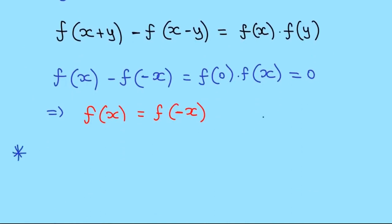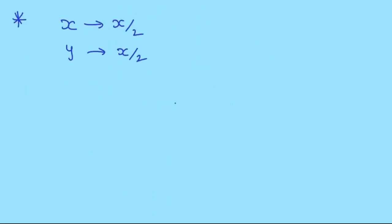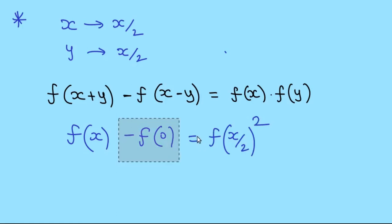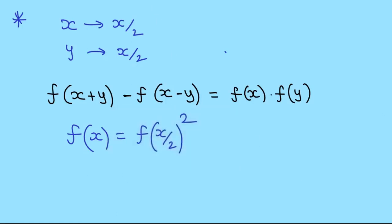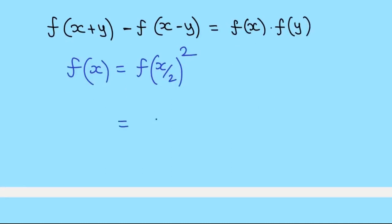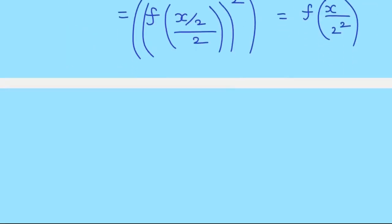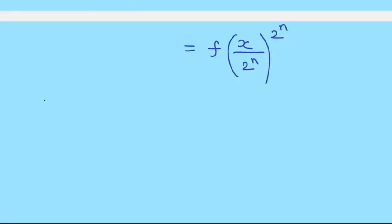The third observation: let x = x/2 and y = x/2. The original relation becomes f(x/2 + x/2) - f(x/2 - x/2) = f(x/2)·f(x/2), so f(x) - f(0) = f(x/2)². Since f(0)=0, we get f(x) = f(x/2)². We can recursively apply this again and again, giving f(x) = f(x/2^n)^(2^n) in general.